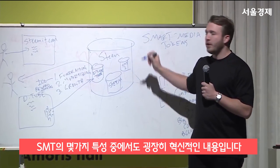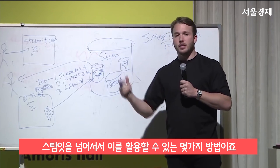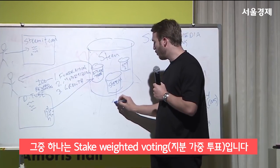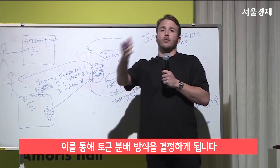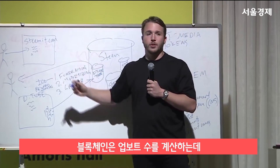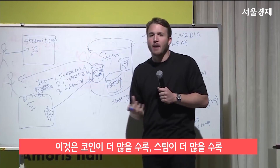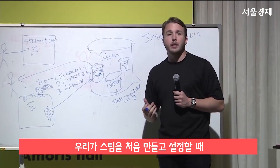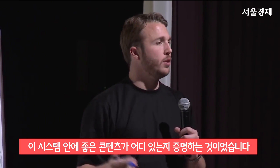One last thing I'd like to dive into is a few features of Smart Media Tokens that I think are very innovative, that take us beyond Steem in some ways. The Steem token has a property called stake-weighted voting for allocation of rewards. Basically, in deciding how tokens get distributed to people writing blogs, the blockchain calculates the upvotes based on how many coins the person who did the upvote was holding.